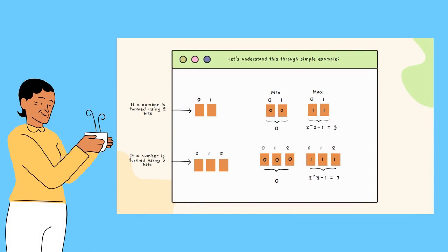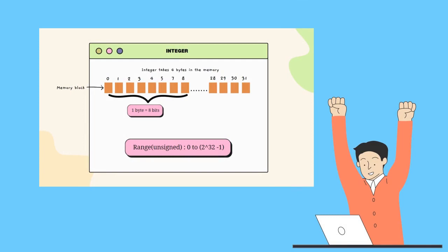Let's work through a simple example of finding the range. If a number is formed using only two bits, the minimum number is 0 (both bits are 0) and the maximum is 3 (both bits are 1), which equals 2 to the power 2 minus 1 = 3. Similarly, with three bits, the minimum is 0 and the maximum is 7, which is 2 to the power 3 minus 1 = 7. So the general formula for the maximum number is 2 raised to the power n, where n is the number of bits, minus 1.